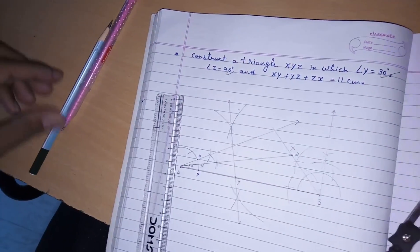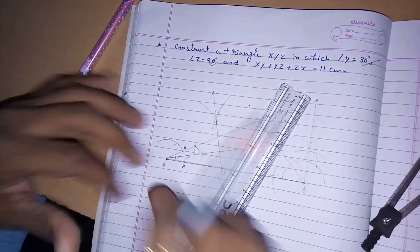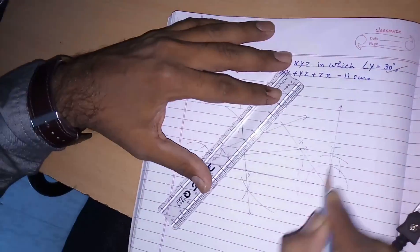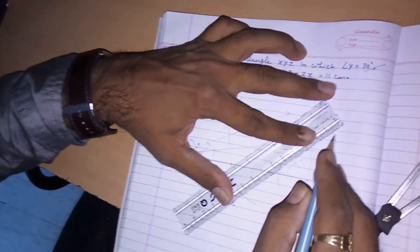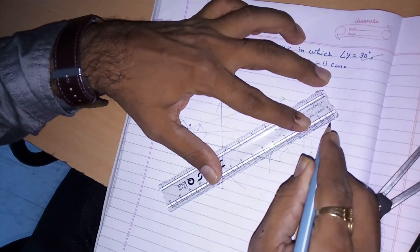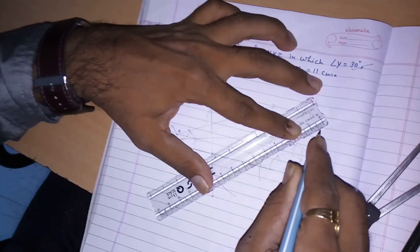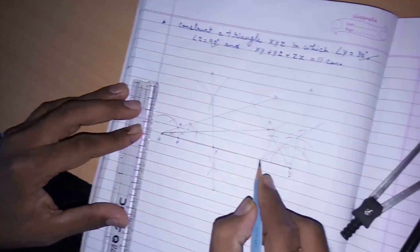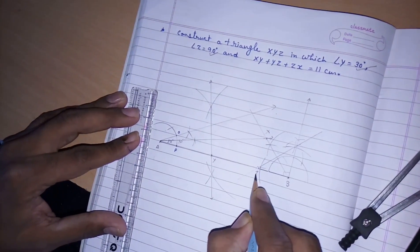And then we have to draw a line which passes through these two intersections. It is intersecting somewhere here. This is Z.